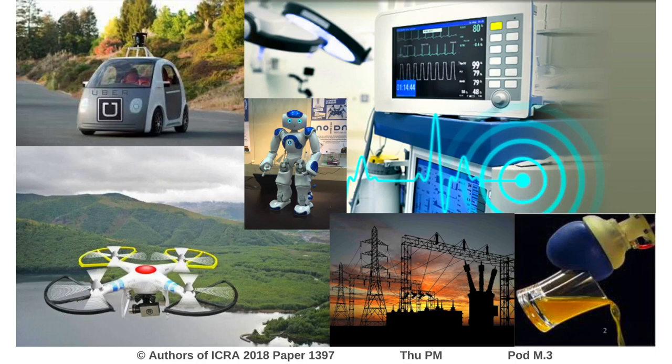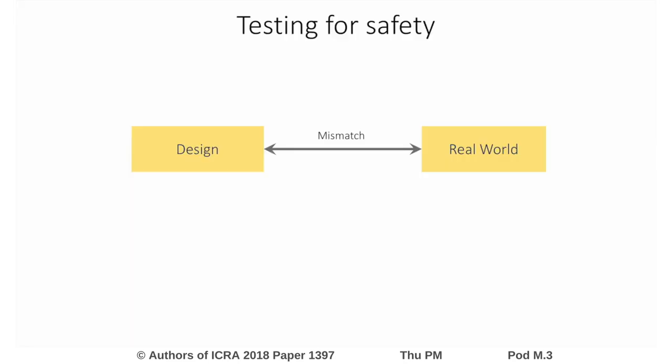Today, autonomous robotic systems interact closely with humans on a daily basis. Deploying these systems without ensuring that this interaction is safe and predictable can have catastrophic consequences. Often, controllers are designed considering deterministic or simplified environments. However, this mismatch between the design and the reality may lead to unexpected behaviors of the controllers.